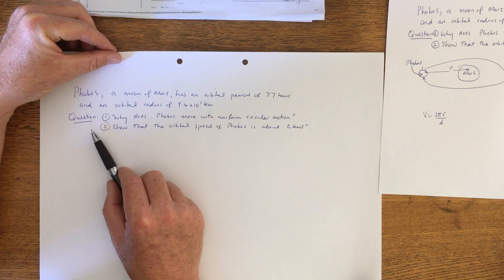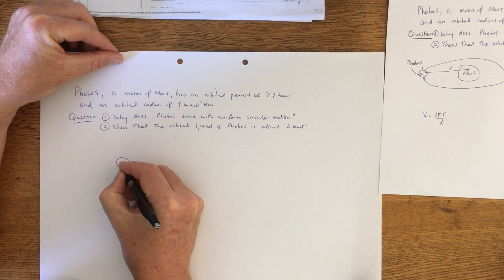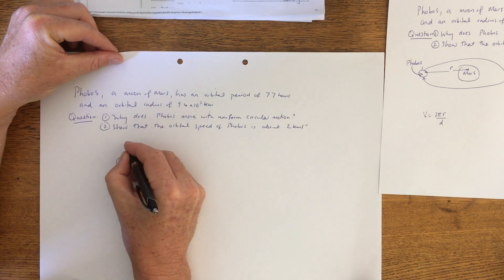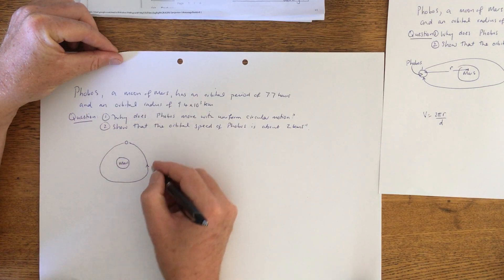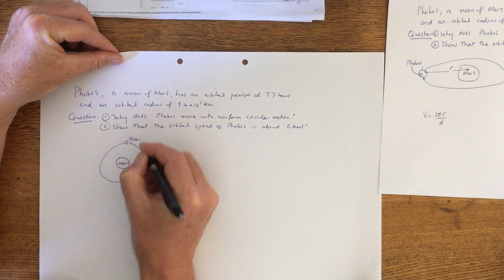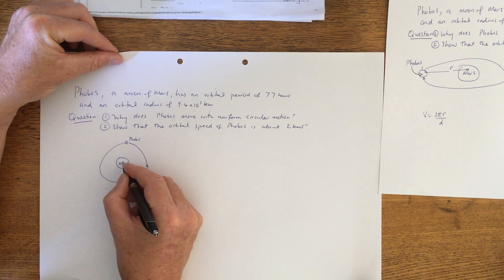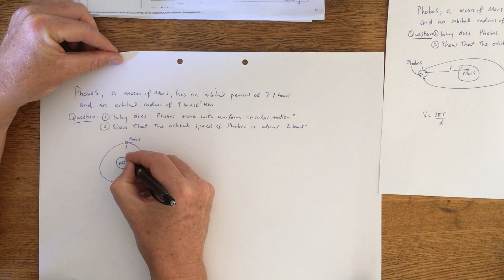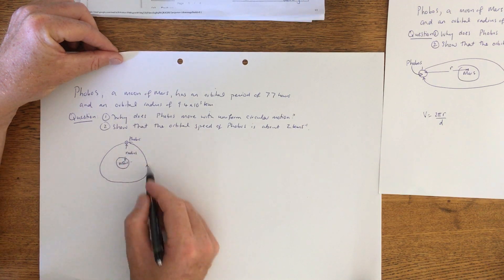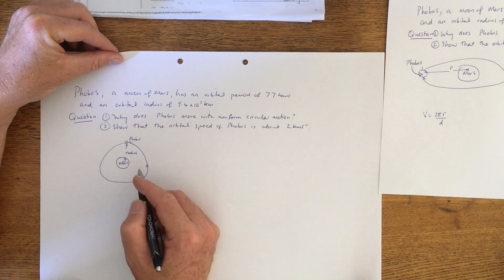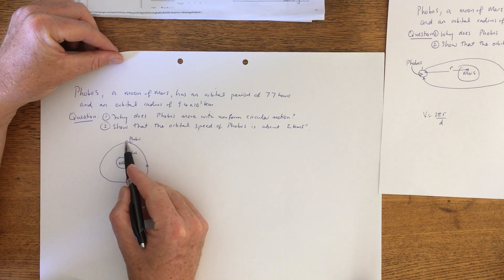One of the first questions that could be asked is why does Phobos move with uniform circular motion? If this is Mars here — this is the planet — and Phobos is moving in a circular motion, as long as the center of the moon and the center of the planet are fixed and this distance isn't changing — we call this the orbital radius — as long as that's the same throughout the path, then we can claim that there is uniform circular speed of that moon.